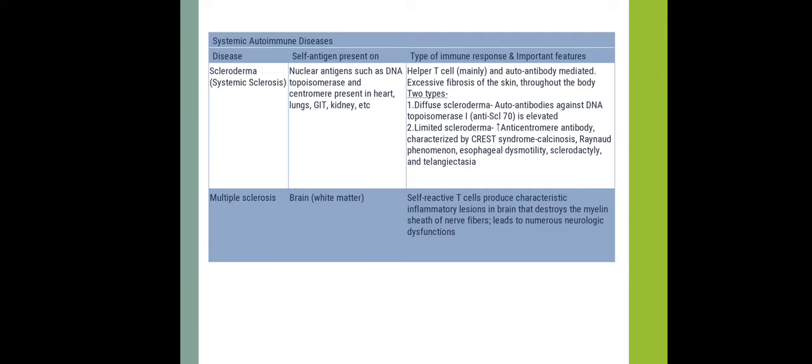Multiple sclerosis: self-antigens are present in the white matter of the brain. Self-reactive T-cells produce characteristic inflammatory lesions in the brain that destroy the myelin sheath of nerve fibers, leading to numerous neurological dysfunctions.